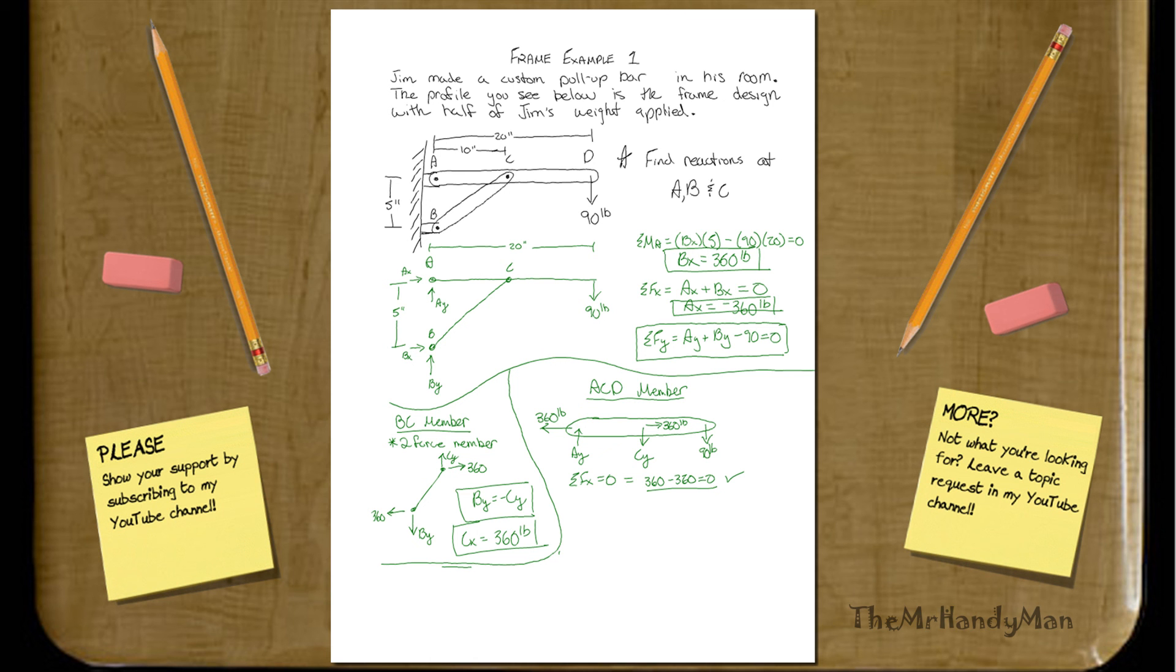What if we did a moment about A real quick? If we did a moment about A, just for this member, the only things I would take into consideration would be, first off, you'd have negative 10 times C_Y minus 20 times 90.